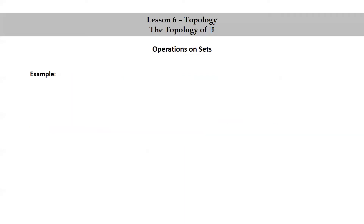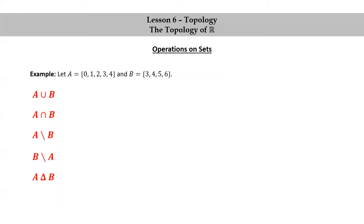Let's look at an example. Let A be the set consisting of 0, 1, 2, 3, and 4, and B the set consisting of 3, 4, 5, and 6. Let's go ahead and perform the operations that we just defined on these two sets.